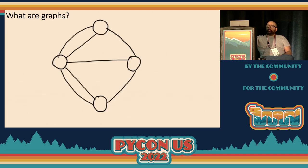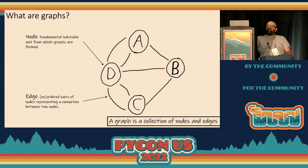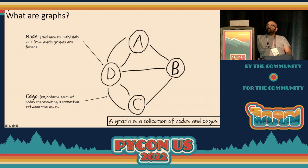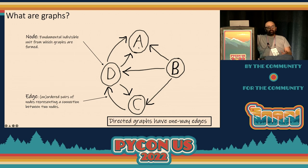Here's a more classic illustration of a graph. The formal definition is that a graph is a collection of nodes and edges. Nodes are the fundamental atomic unit in a graph, and edges are pairs of nodes that represent a connection between them. We've got nodes A, B, C, and D here with edges between them. We can also have directed edges, and in a directed graph your edges would have to be ordered pairs.